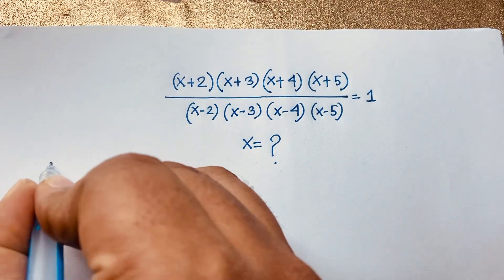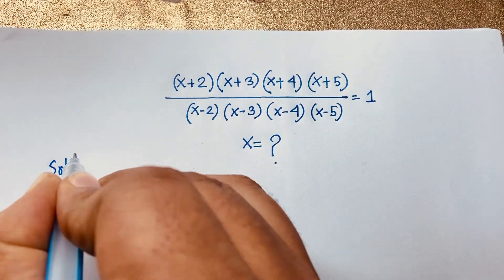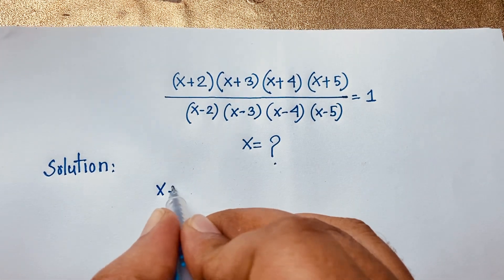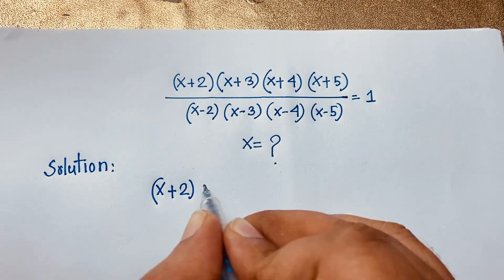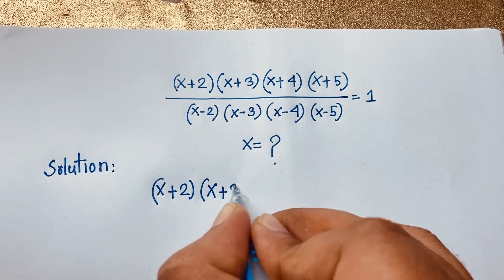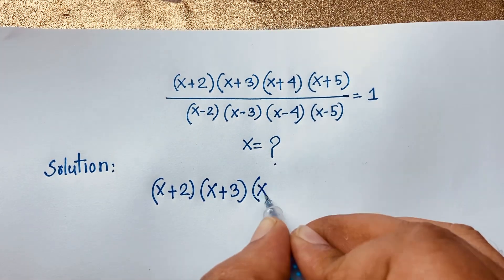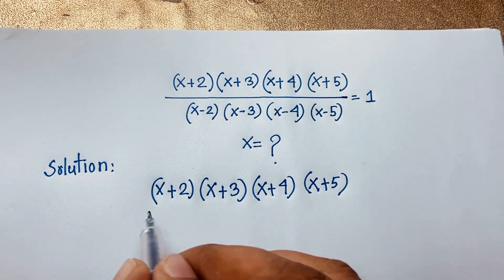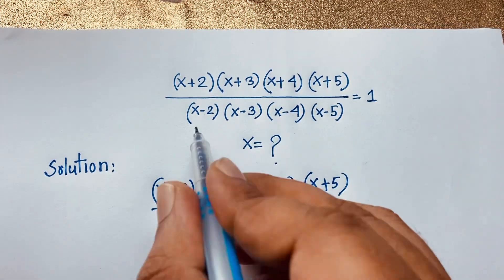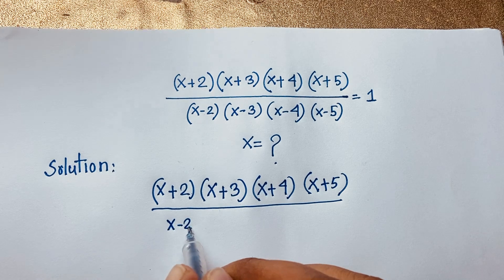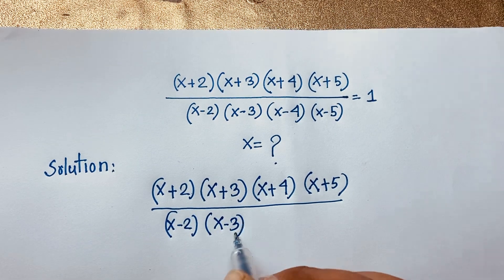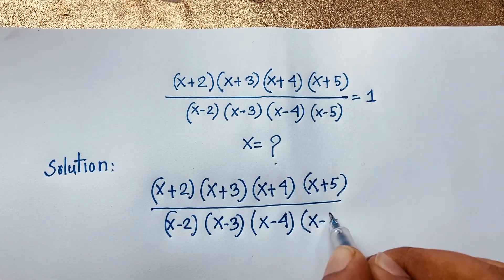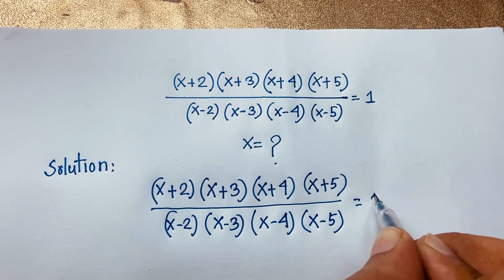Let's begin the solution. Our question is: (x+2) times (x+3) times (x+4) times (x+5), over (x-2) times (x-3) times (x-4) times (x-5), is equal to 1.